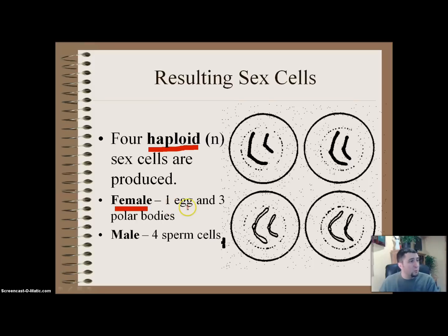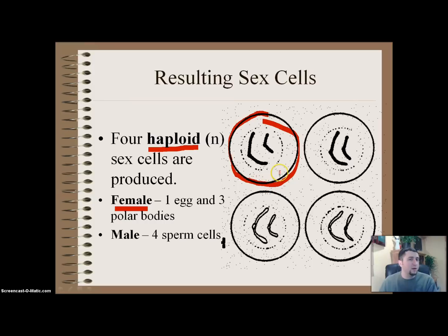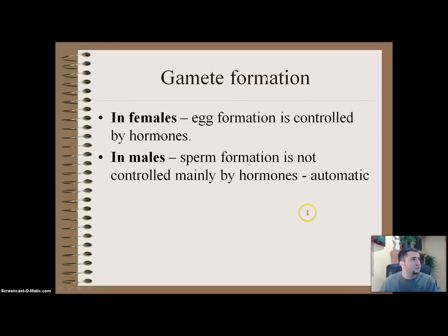As a result, we get four haploid cells produced. If you are a female, we get one egg and three polar bodies — only one actually produces an egg and the other three die off. This one egg contains all the resources the other three would have had, which is kind of why it takes a month to make one. If you're a male, we get four new sperm cells.